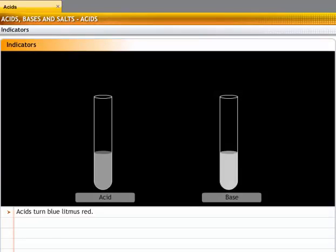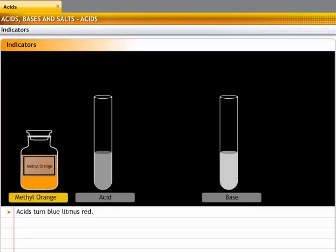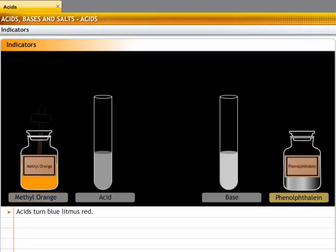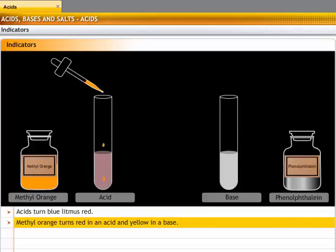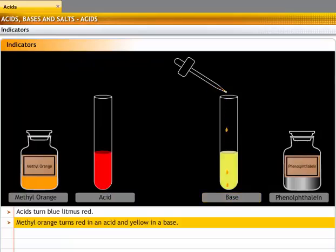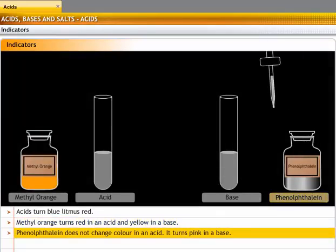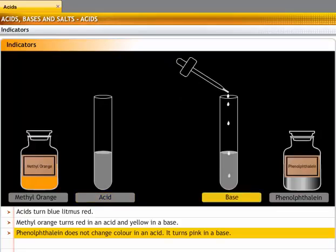Apart from natural indicators, there are a few synthetic indicators such as methyl orange and phenolphthalein. The neutral color of methyl orange is orange, and it turns red in an acid and yellow in a base. Phenolphthalein is colorless. It does not change in an acid but turns pink in a base.